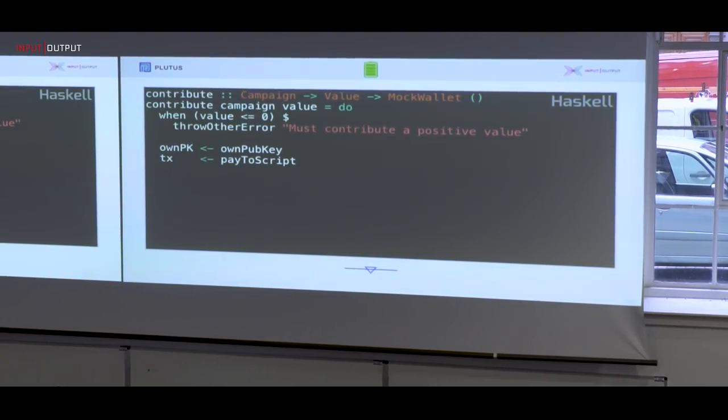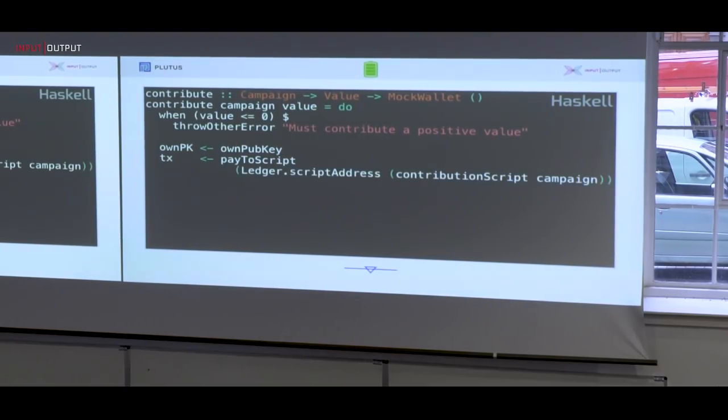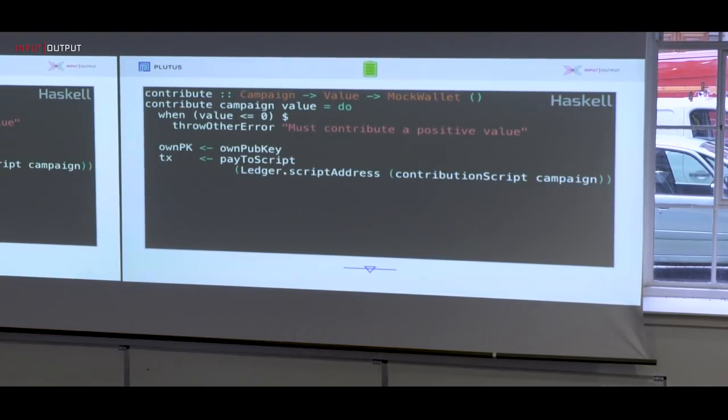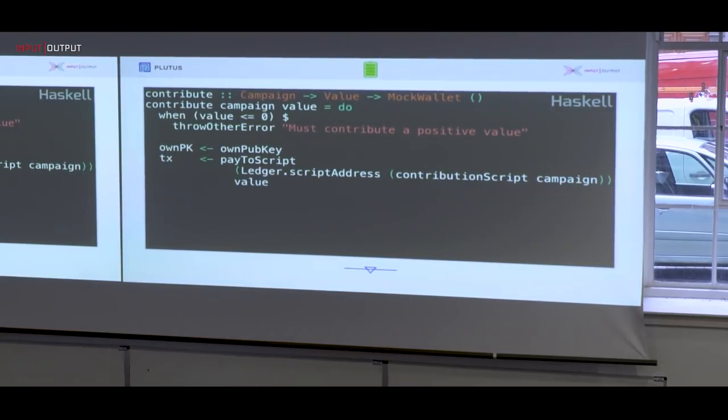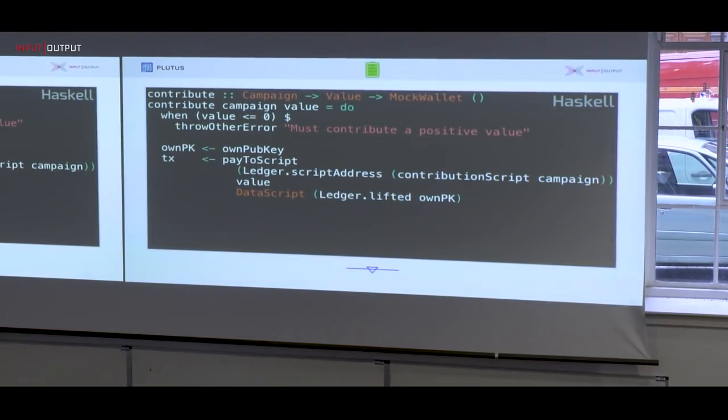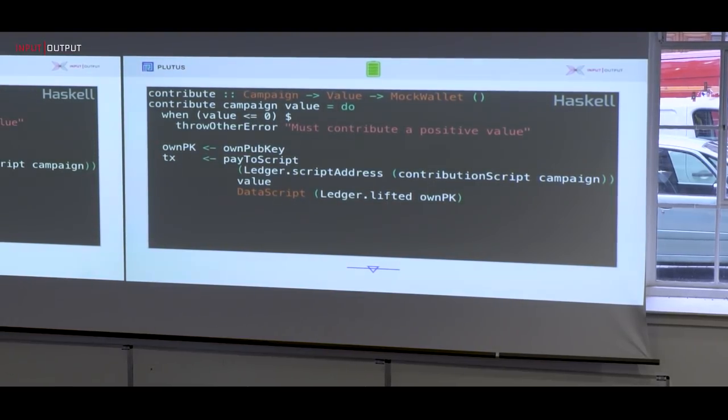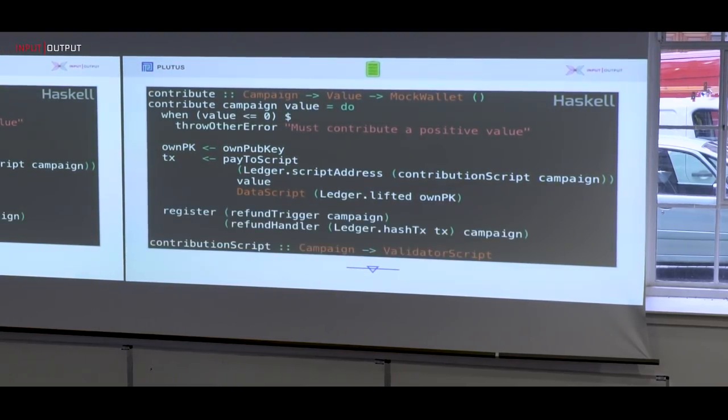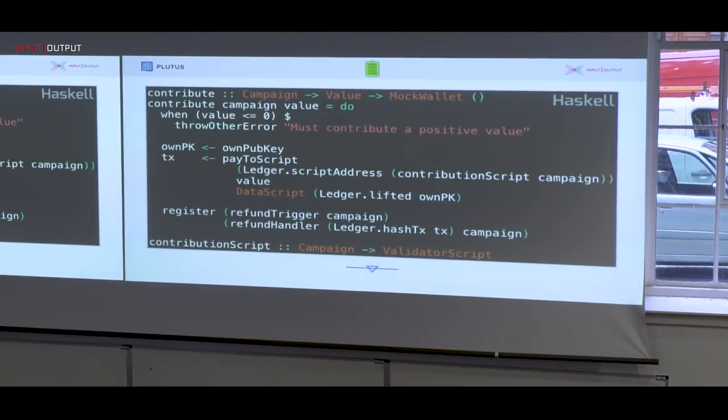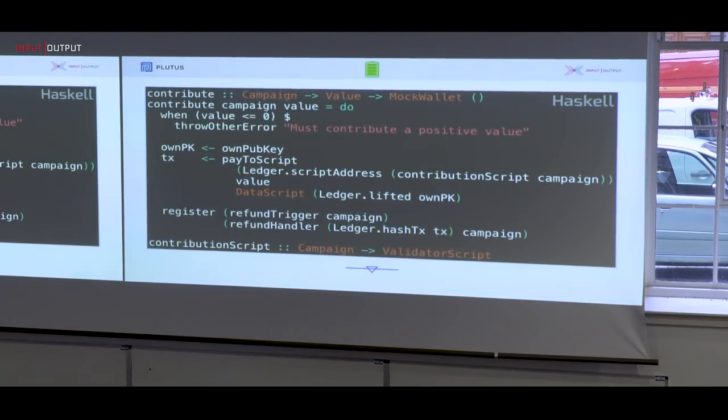And then we create a transaction with the script. What do we have to give this function creating the transaction? It has to get the script. I'll talk about this in a second. We have to tell it how much you want to contribute. And then it gets as the data item, remember, extended UTXO model, there's a data item, a data script together with the validator, which in this case is the public key of where a refund goes to. And then we set up a trigger that if a refund condition arises, we can execute the refund code.